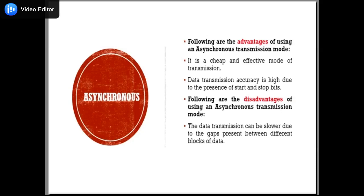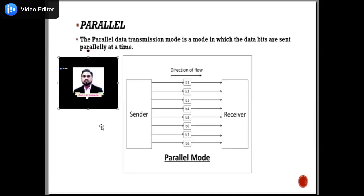In parallel data transmission mode, the data bits are sent in parallel at the same time simultaneously. The sender sends all data at the same time from sender to receiver. Multiple transmission lines are used in this mode. Multiple data bytes can be transmitted in a single clock cycle. This mode is used when a large amount of data is to be sent in a shorter duration of time, and it is most commonly used in short-distance communication.